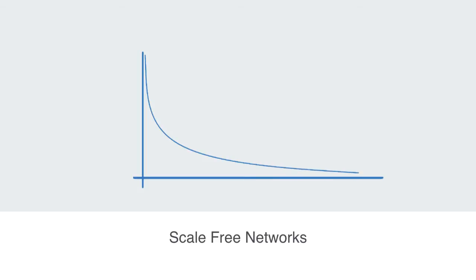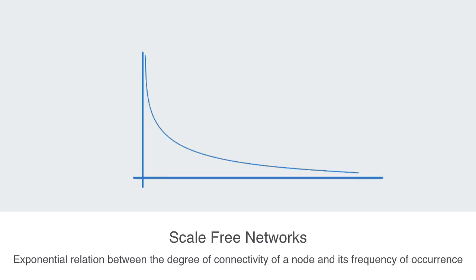These highly centralized networks are more formally called scale free or power law networks, that describes a power or exponential relationship between the degree of connectivity a node has and the frequency of its occurrence.